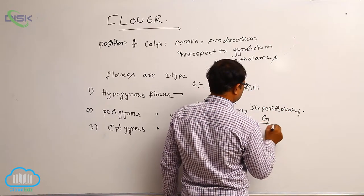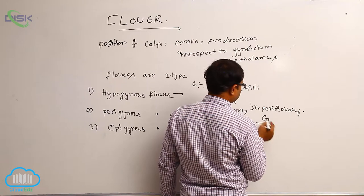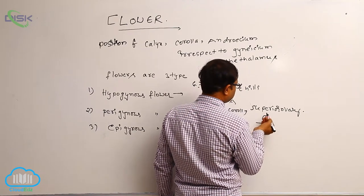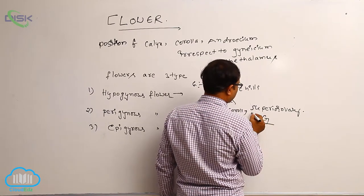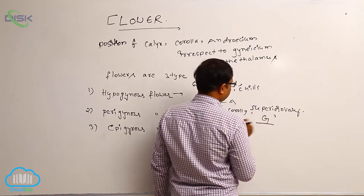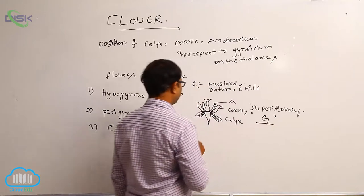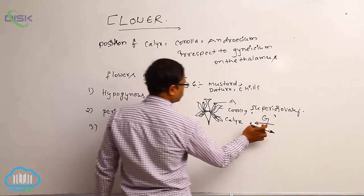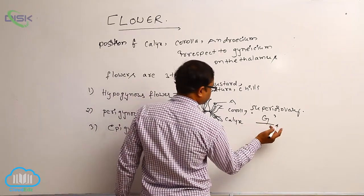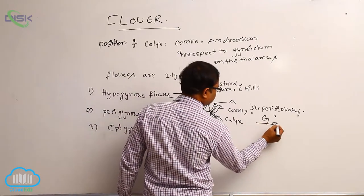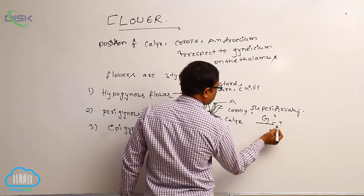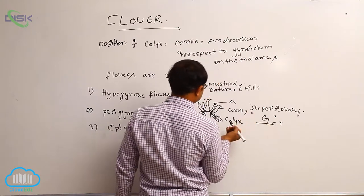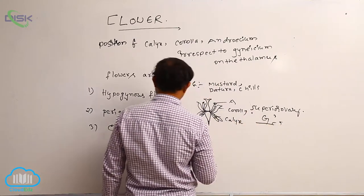So in the diagram, it is the thalamus. Above the thalamus, G means Gynoecium — it is indicated by the symbol G. Below that, this line indicates the thalamus. Above the thalamus, Gynoecium is present — that is known as superior ovary.